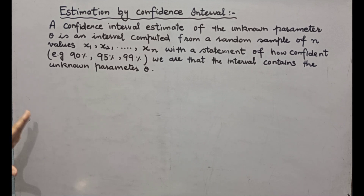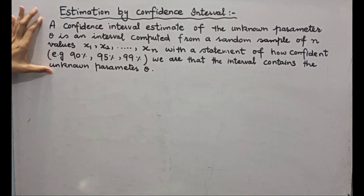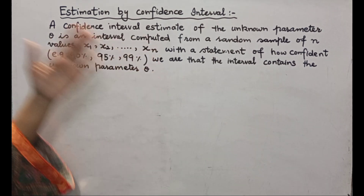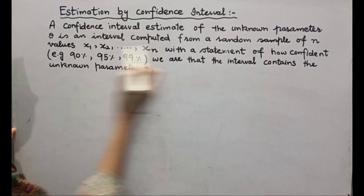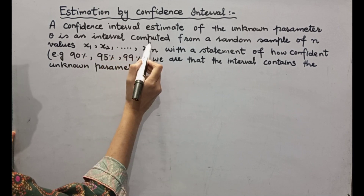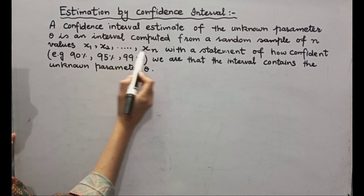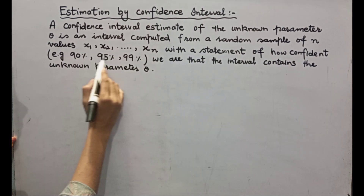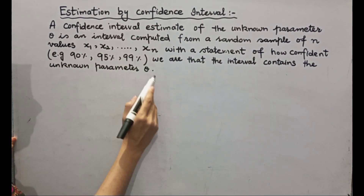I request you to subscribe and like my channel. Now let's go to our topic. A Confidence Interval Estimate of the unknown parameter theta is an interval computed from a random sample of n values — that is x1, x2, ..., xn — with a statement of how confident we are (90%, 95%, 99%) that the interval contains the unknown parameter theta.